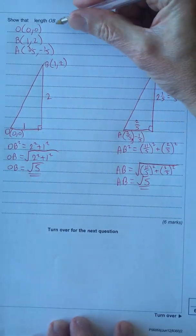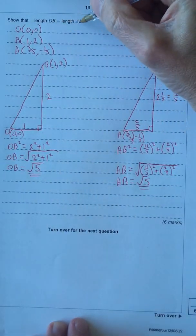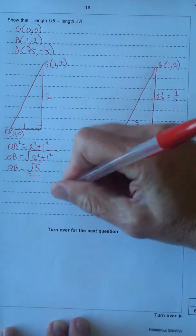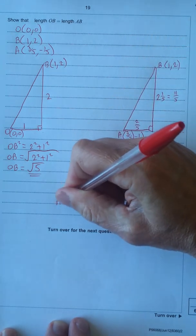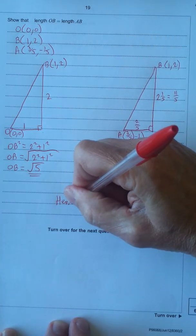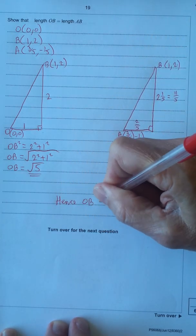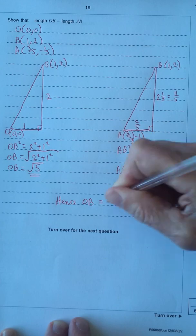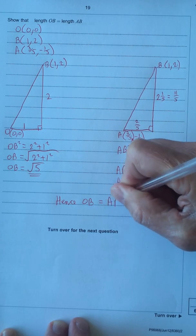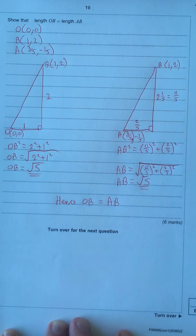Because it says show that length OB equals length AB, we can now conclude: OB equals AB, both equal to root 5. And that's it.